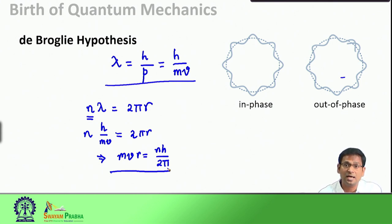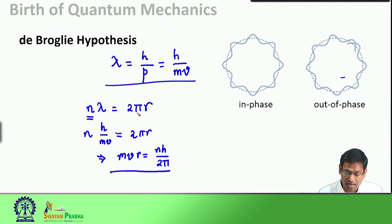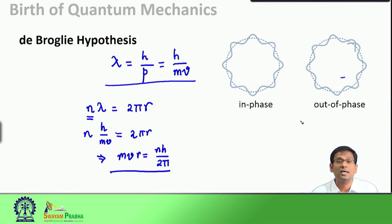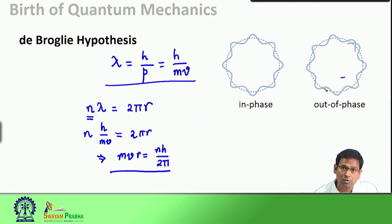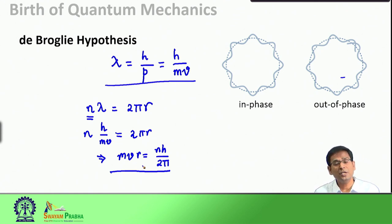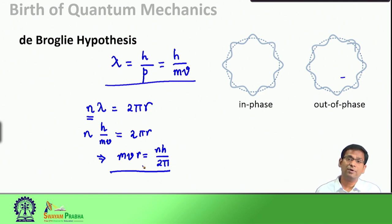De Broglie's hypothesis - that the electron with a particular mass moving at a particular speed has a de Broglie wavelength - requires that nλ = 2πr for the electron to be stable in its orbit around the nucleus; otherwise it develops an out-of-phase and the electron would never exist there. So if the electron is orbiting the nucleus in a fixed orbit, it must satisfy the condition that its angular momentum is quantized. This brings us to what is called wave-particle duality, where a particle behaves like a wave and a wave behaves like a particle, raising an interesting new problem.